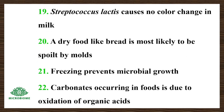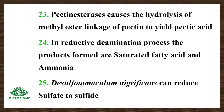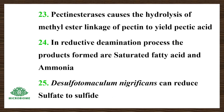Streptococcus lactis causes no color change in milk. Dry food like bread is most likely to be spoiled by molds. Carbonates occurring in food are due to the oxidation of organic acids. Pectin esterases cause the hydrolysis of the methyl ester linkage of pectin to yield pectic acid. In reductive deamination, the products formed are saturated fatty acid and ammonia. The organism Desulfotomaculum nigrificans can reduce sulfate to sulfide.